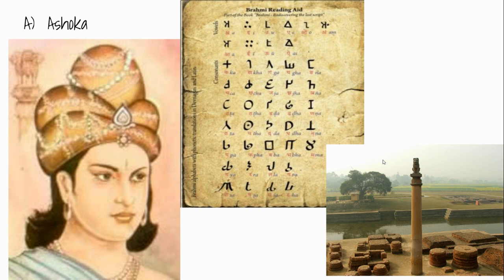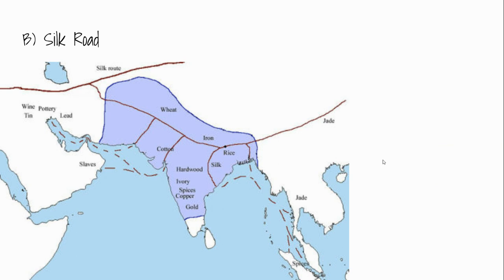Ashoka is probably the most famous ruler of the Mauryan dynasty. He expanded literacy by standardizing language and the way written words are presented. He's also famous for creating a series of pillars throughout the empire, recording the history of his reign and propagandizing how great he was. He greatly expanded trade along the Silk Road, bringing South Asia more completely into the world economy and generating substantial wealth through trade with China, the Middle East, and Europe. South Asia became spectacularly wealthy because of this.